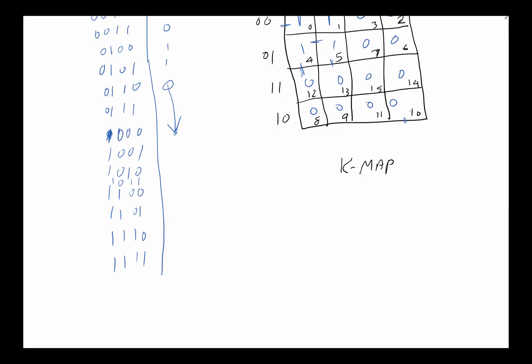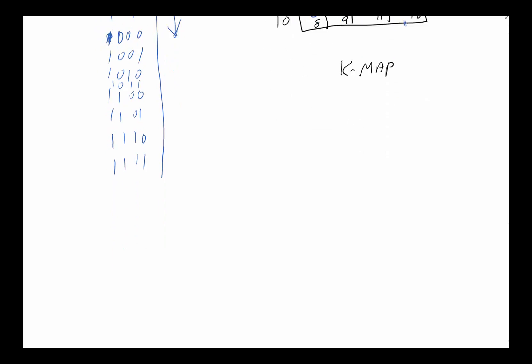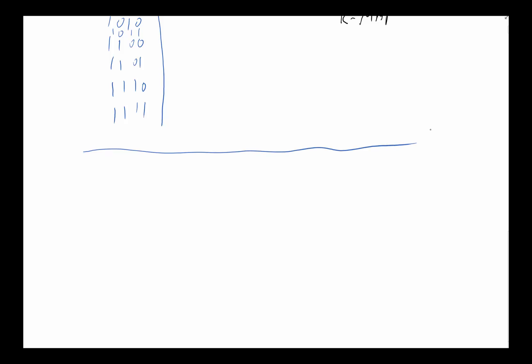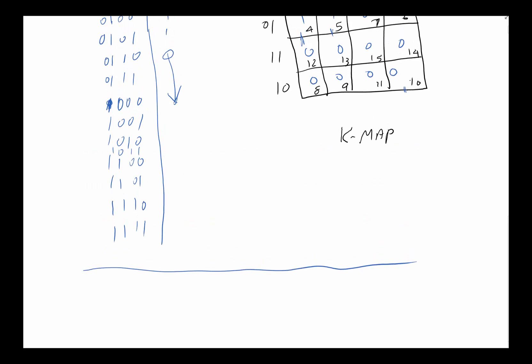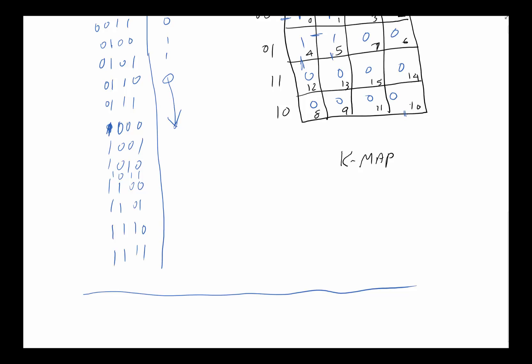So that's a good introduction to Karnaugh maps. Typically, when given a function to minimize using a K-map, the first step is to write it out in a truth table to identify all the minterms, then transfer those values into the K-map. From there, we look for large groups of adjacent ones to find the minimized expression. We'll cover the actual process of minimization in the next video.